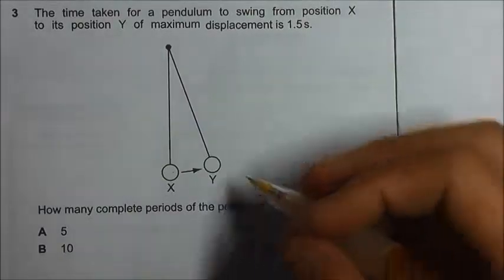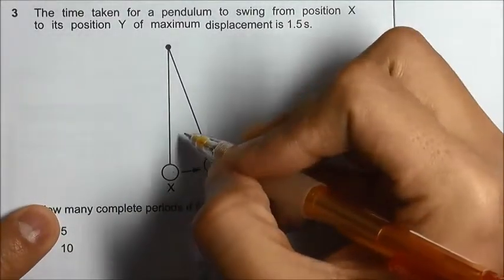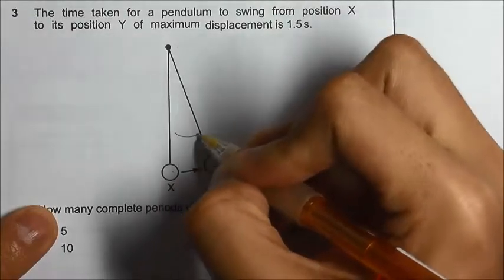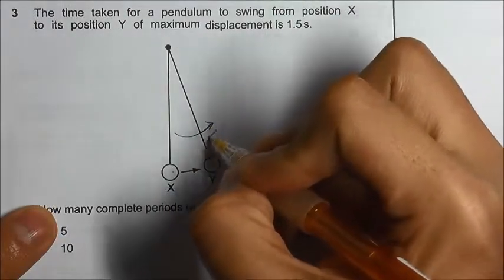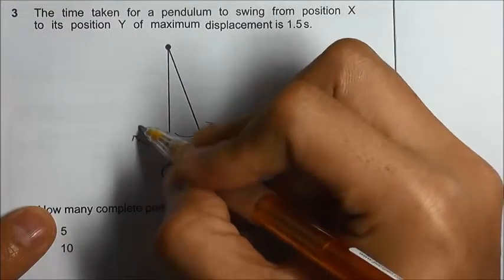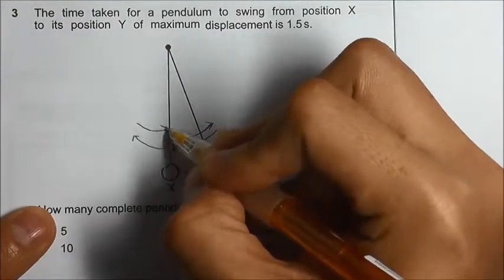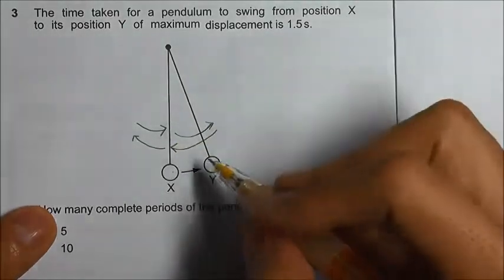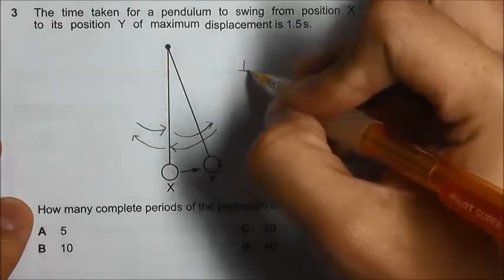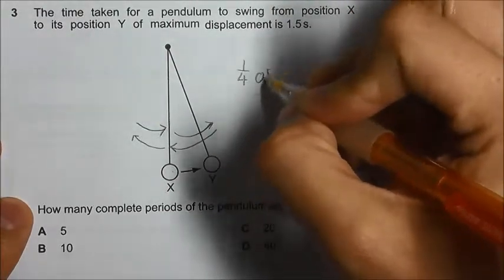To answer this question, we have to understand that an oscillation consists of the movement from X to Y, Y back to X, and from X to the other extreme and back to X. So from X to Y is actually one quarter of an oscillation.